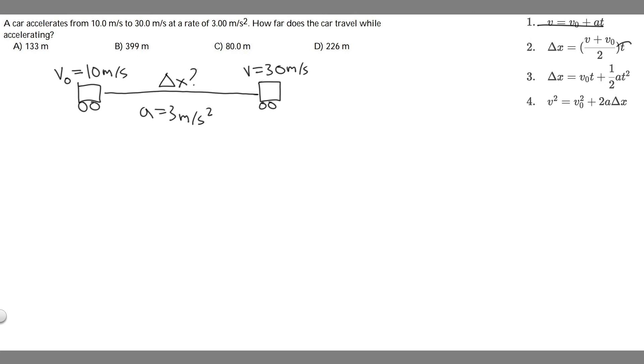So what we're going to do is use equation 4, which is this one right here. It's just v squared equals v sub 0 squared plus 2a times delta x.